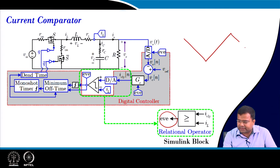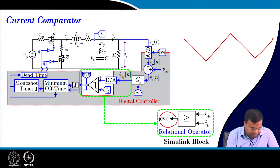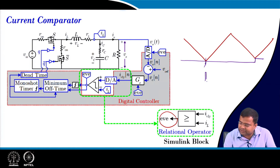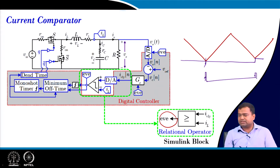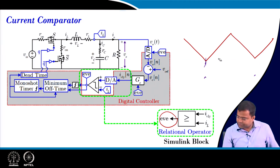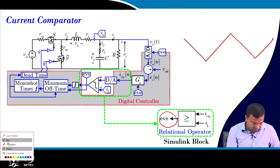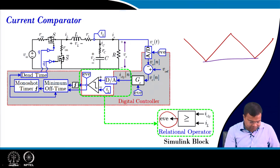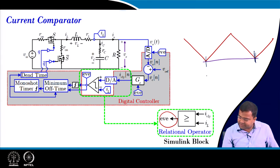Whenever the inductor current reaches the valley current value, we generate the event clock at that valley point. Since the on-time is fixed, we can also generate the clock trigger anywhere within the on-time — it is in our hand. That clock is used for controller computation and ADC conversion. In MATLAB, the comparator output goes to the monoshot timer, which is loaded with the on-time and must have a minimum off-time realization.